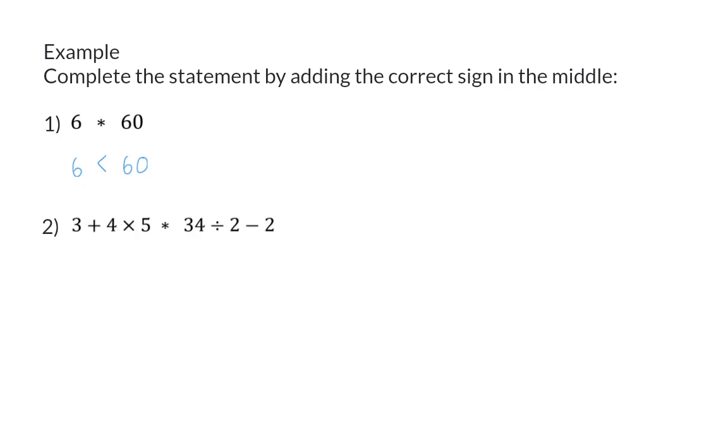In number two, we now also test whether you know the order of calculations. On the left-hand side, we have addition and multiplication, so here we first need to multiply. That will give us 3 plus 20, and that value is 23. On the right-hand side, we have division and subtraction, so we are going to divide first. 34 divided by 2 is 17, minus the 2 will give us 15. And now we can add the correct sign. 23 is bigger than 15, and that is why the open part of the inequality sign will be in the direction of the 23.